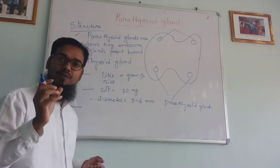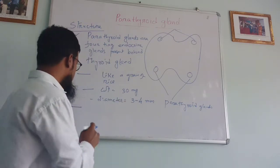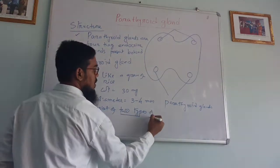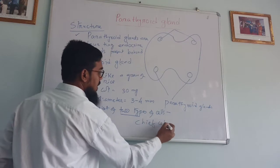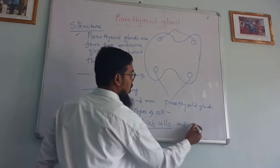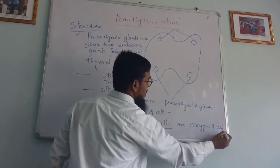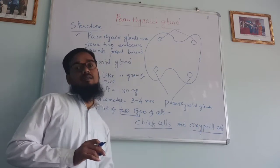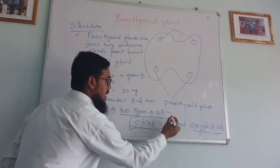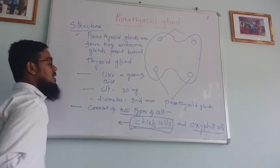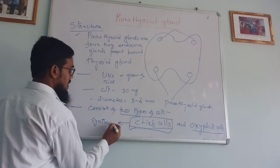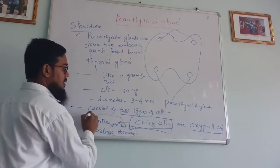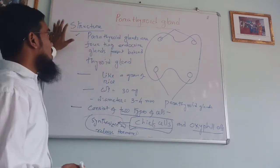This parathyroid gland consists of cells. Parathyroid glands consist of two types of cells. One are called chief cells and the other are called oxyphil cells. These chief cells synthesize and release parathyroid hormone. The function of oxyphil cells is unknown.